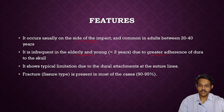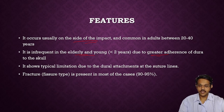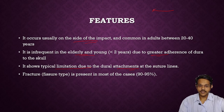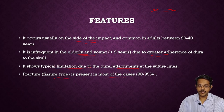Extradural hemorrhage is infrequent in the elderly and in young children below two years of age due to greater adherence of dura to the skull. It shows typical limitation due to dura attachment to the suture lines — the hemorrhage is limited by the suture lines. A fissure-type fracture is present in most cases, that is 90-95% of cases.